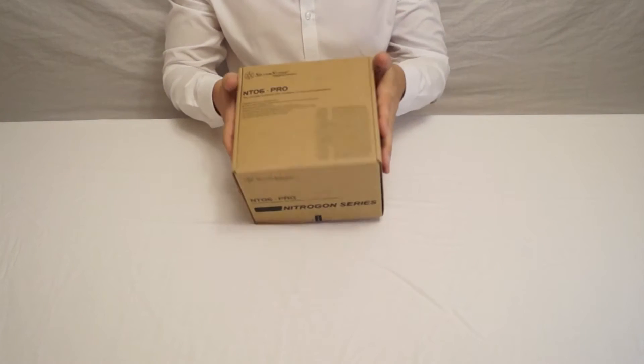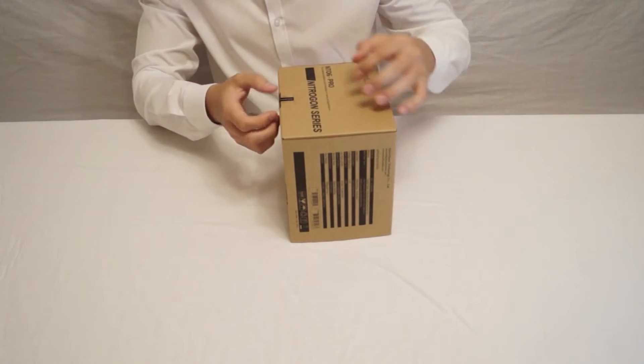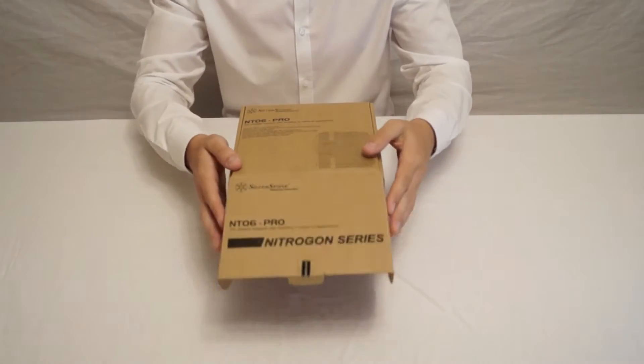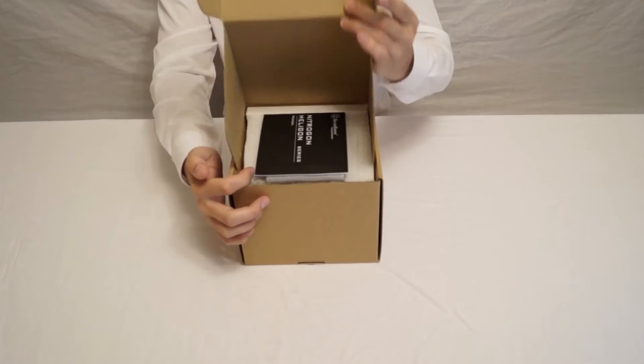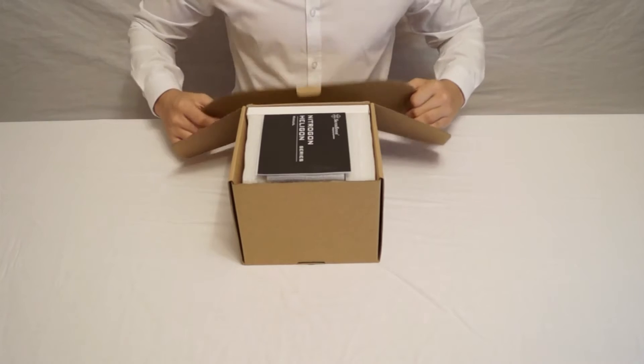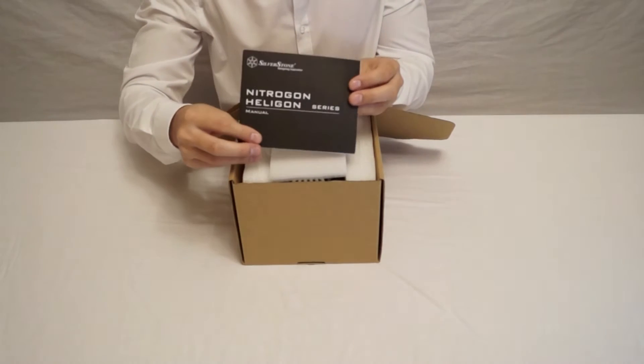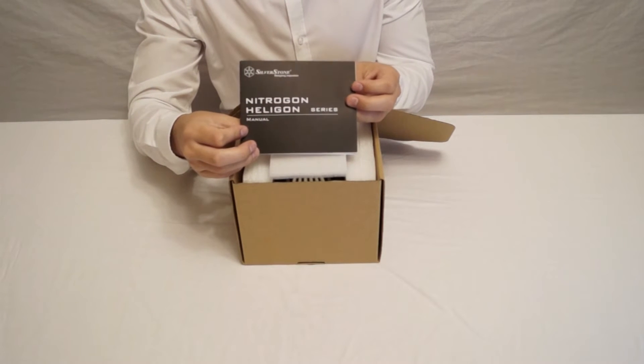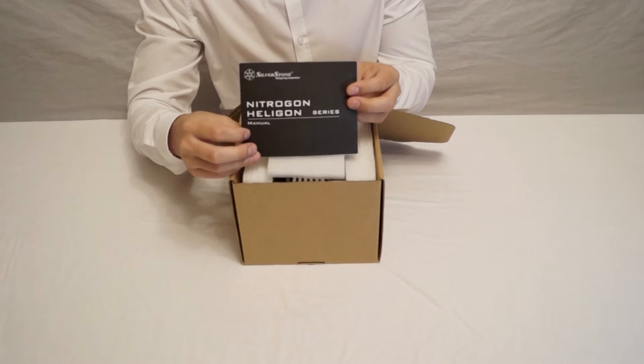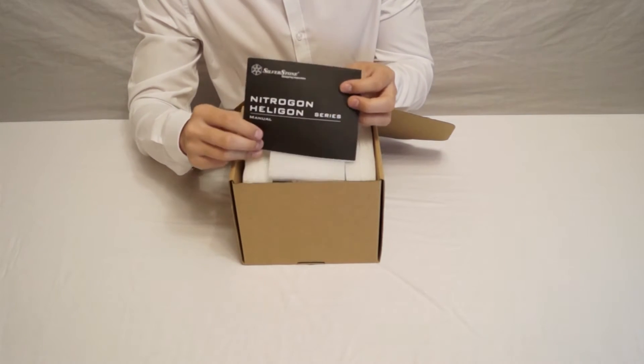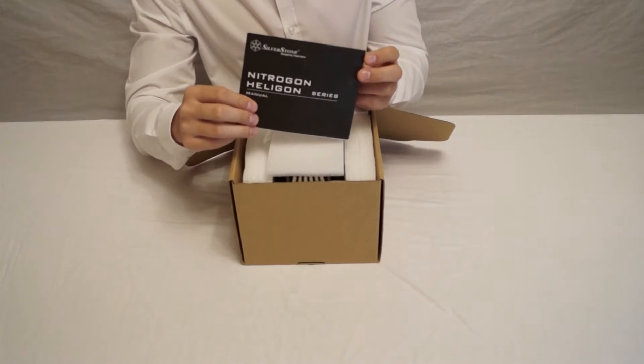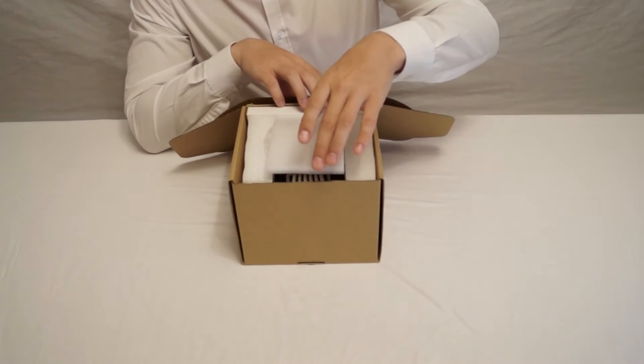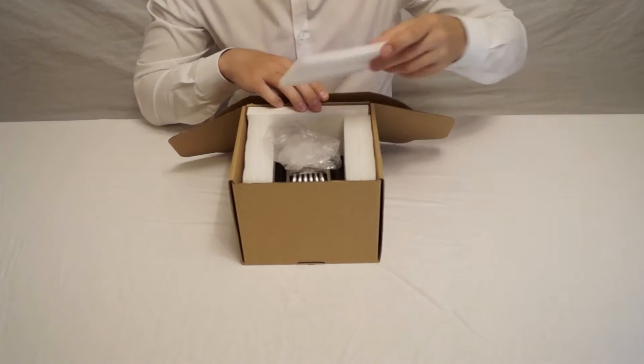So let's take a look at what comes in the box. I'll try and keep you with the best angles possible. We've got the manual here that is basically for the nitrogen series. I don't know how to pronounce that series—I haven't ever covered a product in that series. If you want to leave a comment telling me how to pronounce it, that would be greatly appreciated. We've got good foam packaging.